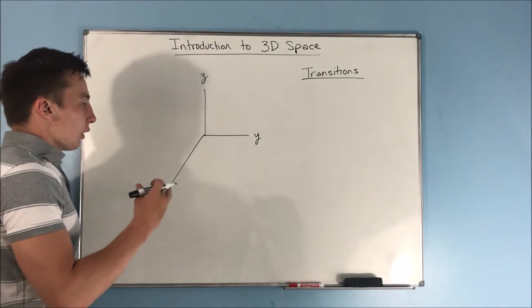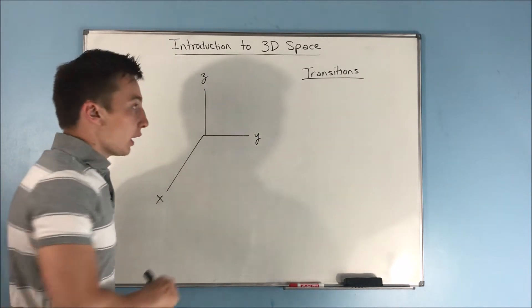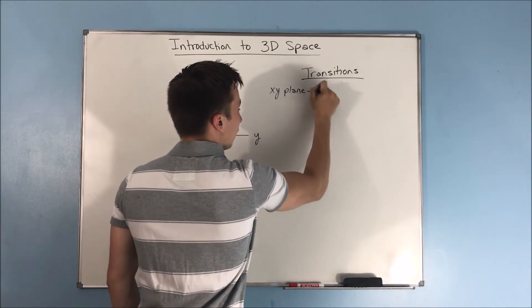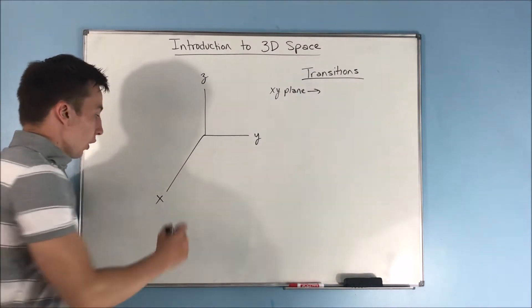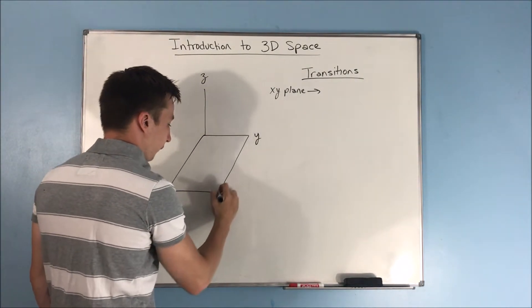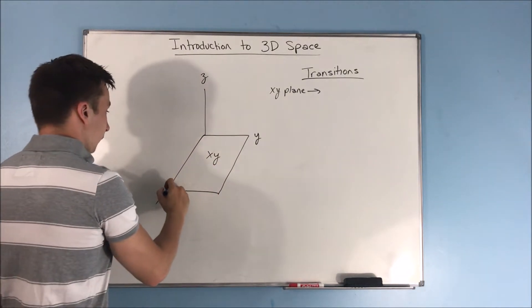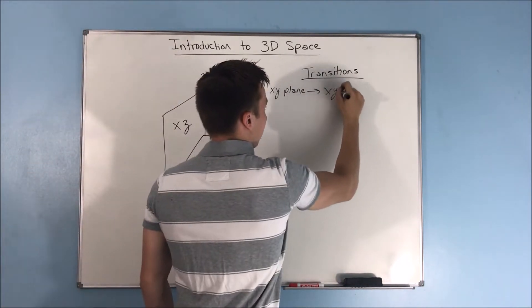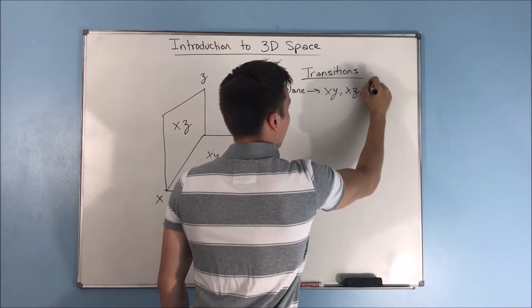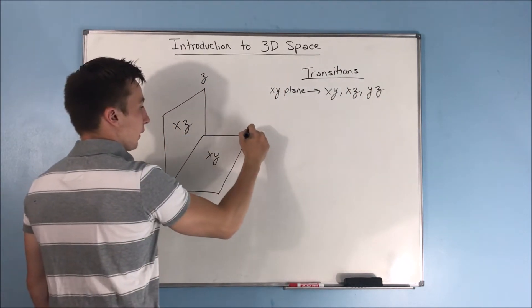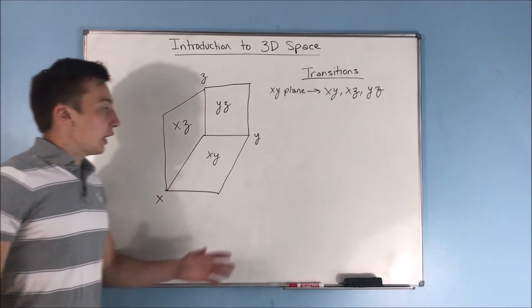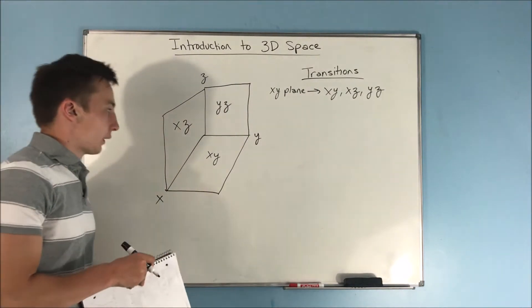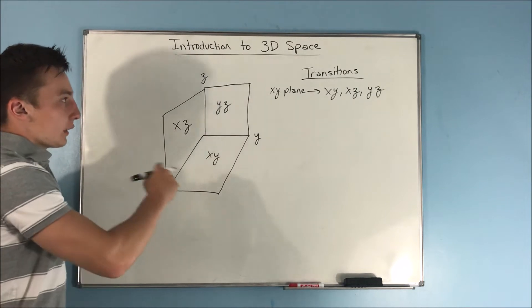So first off, you no longer have just an x, y plane. Before in 2D, we just had an x, y plane. It was a singular plane. But now, we not only have the x, y plane, we also have the x, z plane. So we have x, y. We have x, z. And we also have y, z. And y, z, of course, would be this plane right here. And this plane, of course, it's going to go on forever in all directions, right? But it's going to be flat, of course. So that's one thing that's different.